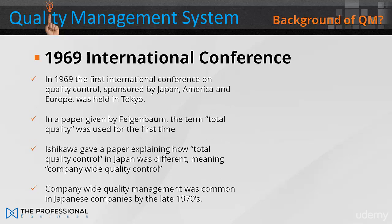In 1969, the first international conference on quality control, sponsored by Japan, America, and Europe, was held in Tokyo. In a paper given by Feigenbaum, the term 'total quality' was used for the first time and referred to wider issues such as planning, organisation, and management responsibility. A paper also explained how total quality control in Japan referred to company-wide quality control, and described how all employees, from top management to the workers, must study and participate in quality control.